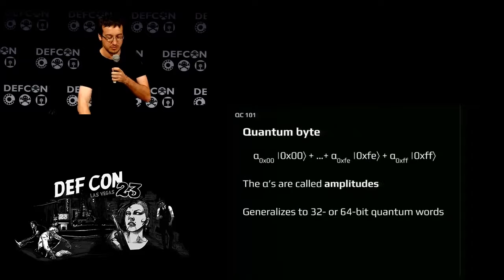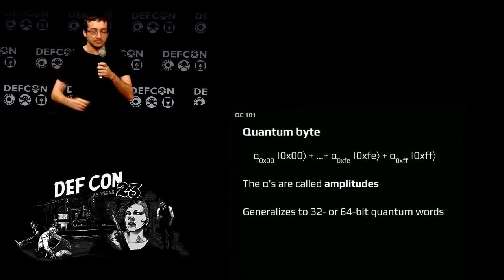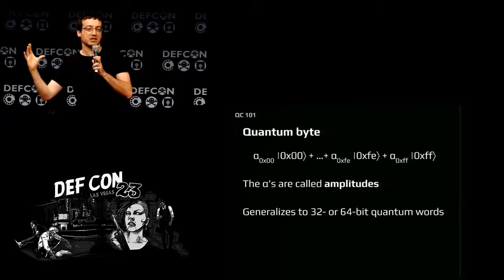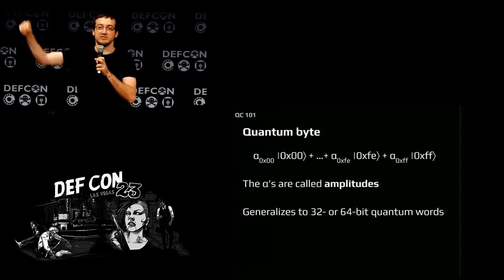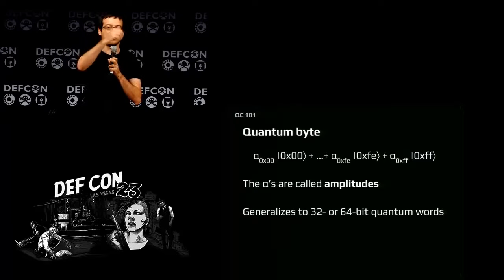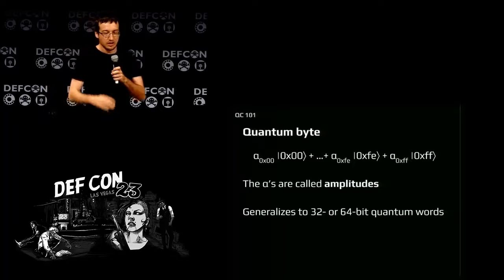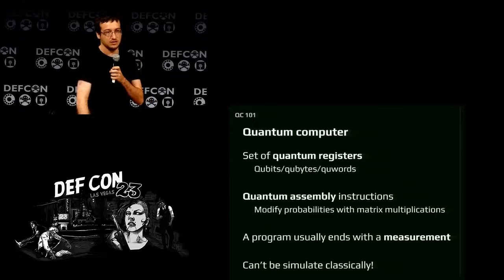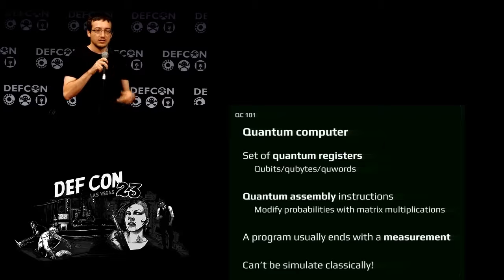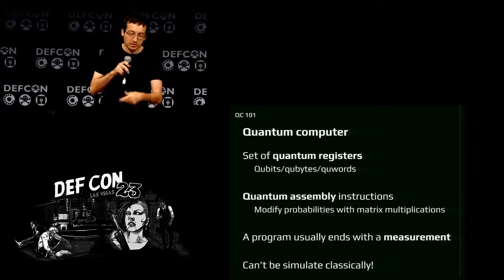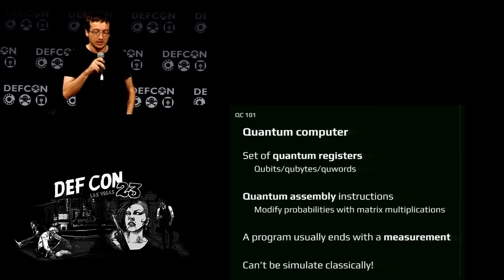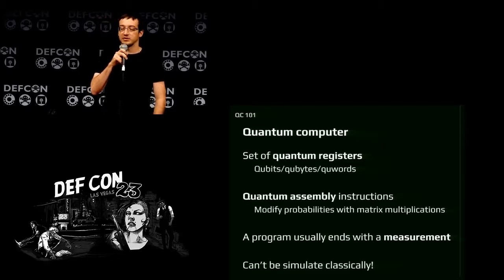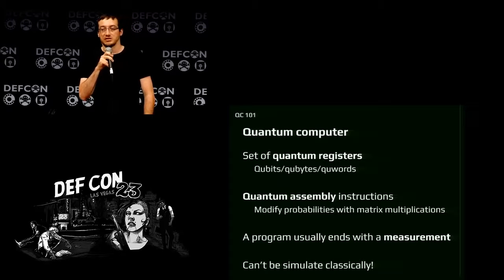You can generalize to quantum bytes: instead of one bit, you have eight bits with different probabilities for each byte. With a sequence of eight quantum bits, when you observe it, maybe it will be 0xFF with some probability, 0x01 with another, maybe it will never be 0x00. You can generalize to 32-bit or 64-bit quantum words, whatever number. Using these objects, you build a quantum computer — like a normal computer, you have registers, and you transform the state using what is like quantum assembly, just with different instructions than the classical ones you know.